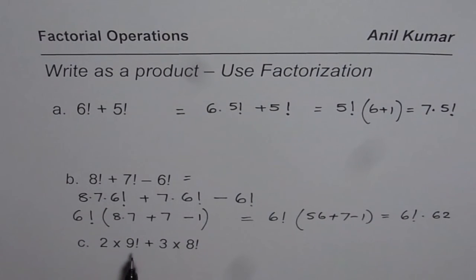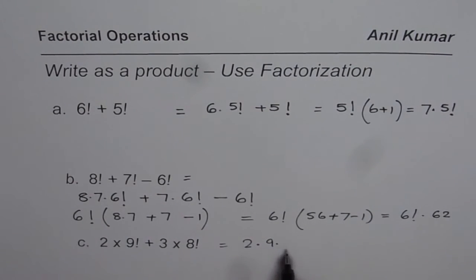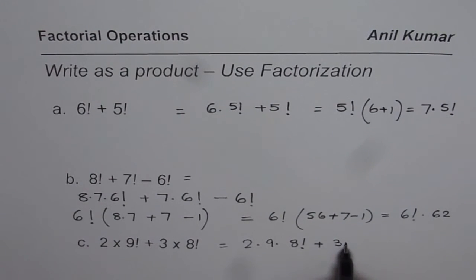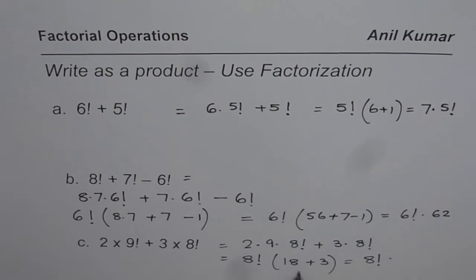The last one is 2 times 9 factorial plus 3 times 8 factorial. Now 9 factorial can be written as 9 times 8 factorial. So 2 times 9 factorial becomes 2 times 9 times 8 factorial, plus 3 times 8 factorial. Now 8 factorial is common, so we write 8 factorial times the quantity 2 times 9 plus 3, which is 18 plus 3, giving us 8 factorial times 21.